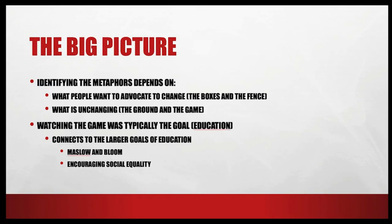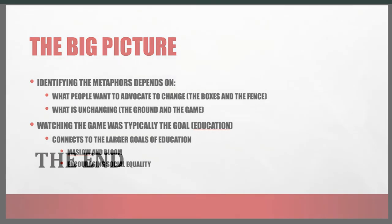In general, it seemed that identifying what the parts of the cartoon stood for depended on what people thought could be changed — which would be the fence and the boxes — and what people thought could not be changed, which would be the ground and the game. This in turn connected to how the larger goal was understood. Some made specific reference to Maslow's hierarchy or Bloom's taxonomy, and most talked in some way about education in terms of the broader social goal of equity, specifically in education but also more generally in society.